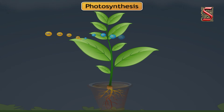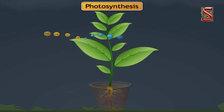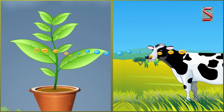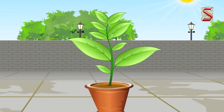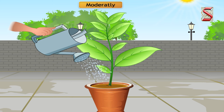Plants also respire like us, but it is difficult to observe this through experiments. We can just conclude that plants and animals use oxygen during respiration. Now that you have learnt how plants breathe, you will know the reason for watering potted plants moderately.